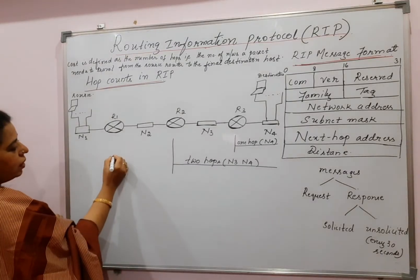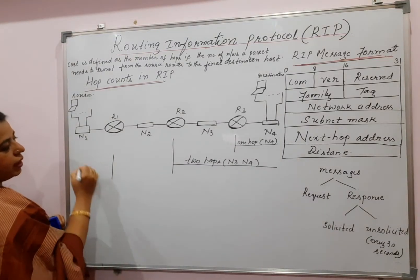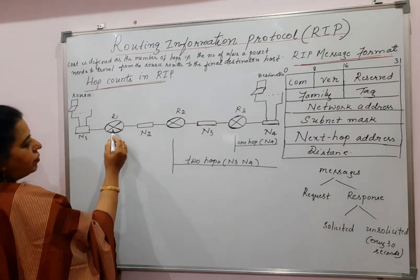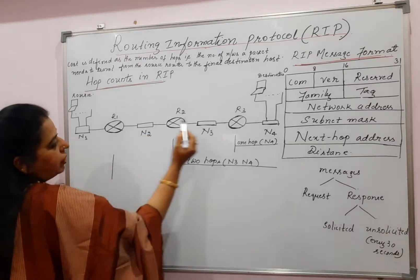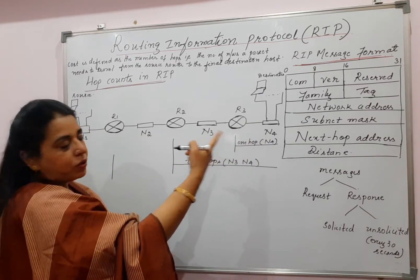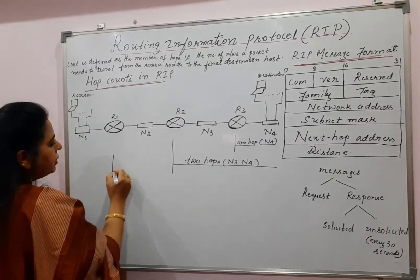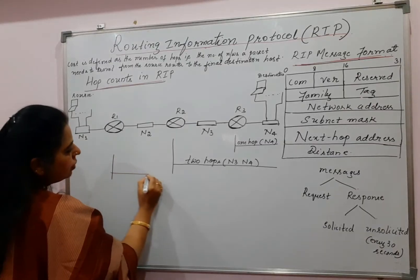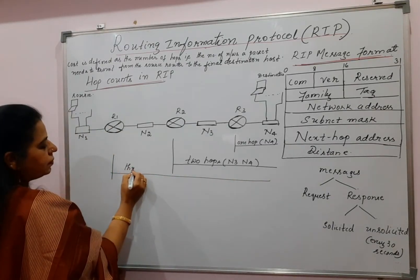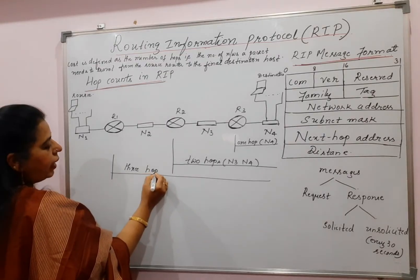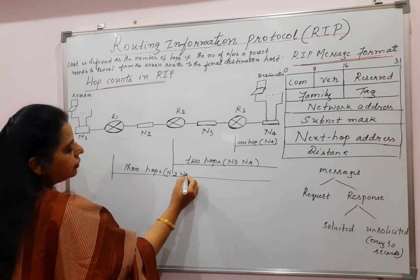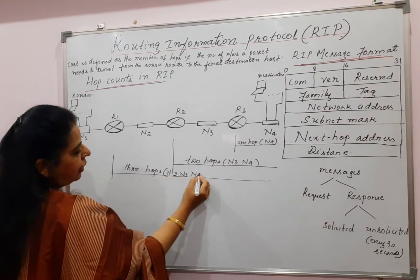What about R1? R1 is here and the packet that comes from R1 has to travel network N2, N3, and finally you have to include the destination network also. So it is three hops and the networks are N2, N3, and N4.